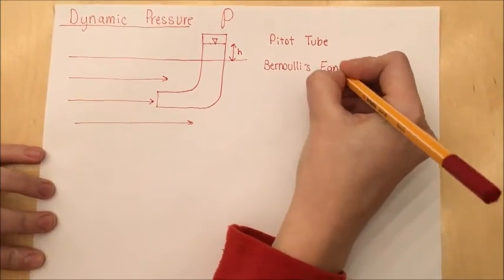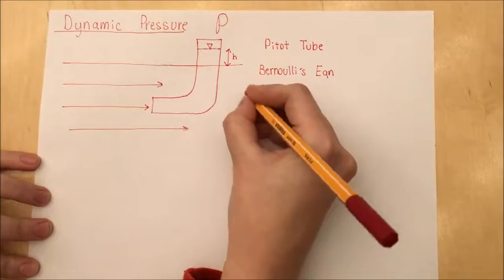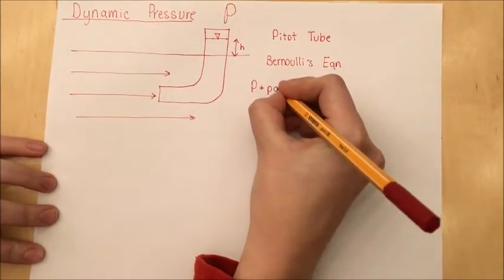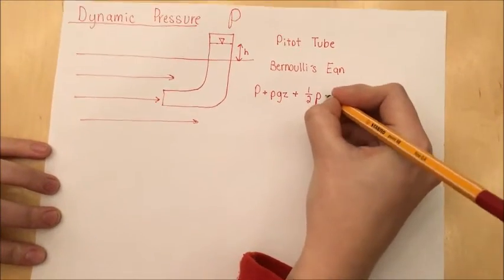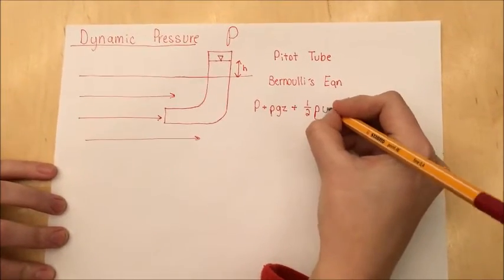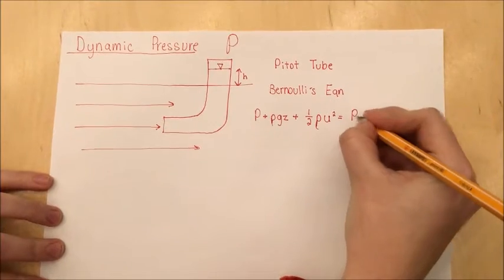The equation that is used to relate dynamic and static pressure is that of Bernoulli's equation. This can be applied to different points along a streamline. The one-half rho u squared term represents the kinetic energy contribution of the fluid.